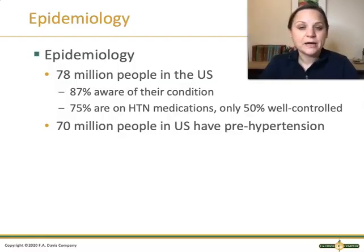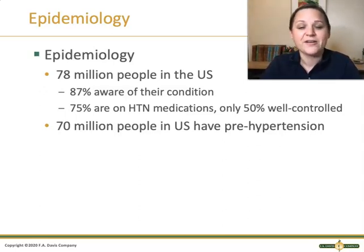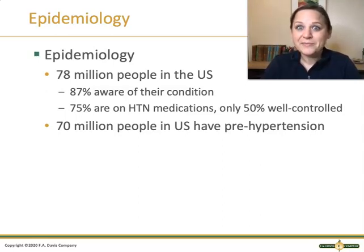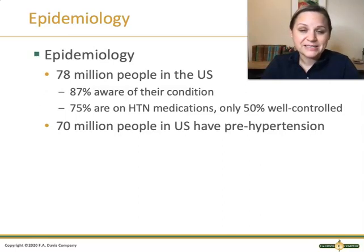Hypertension is an incredibly common condition in the United States, with over 78 million patients having hypertension. Unfortunately, not all of them even know they have it — only about 87 percent are aware, and 75 percent are on blood pressure medications, but only 50 percent of those are well-controlled. In addition, 70 million more Americans have pre-hypertension, which is a warning sign that it's going to get worse if something doesn't change.